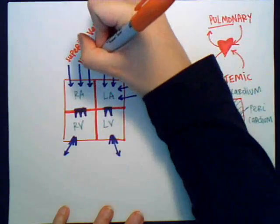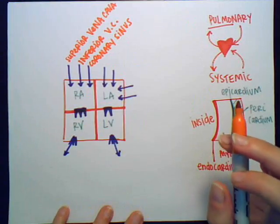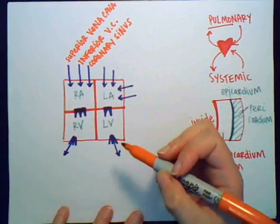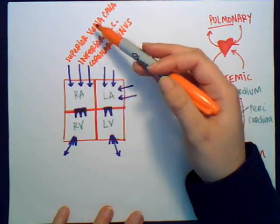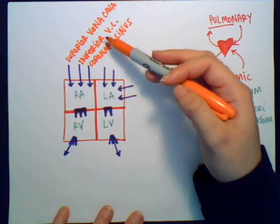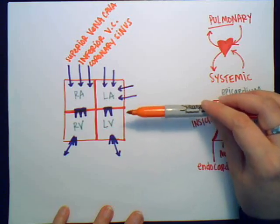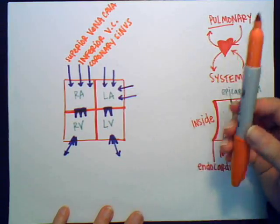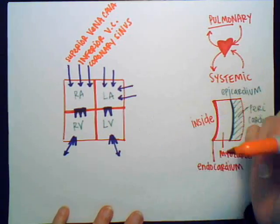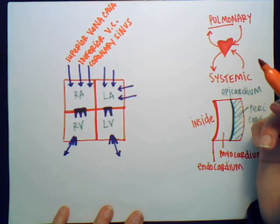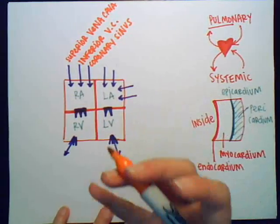The third vessel is the coronary sinus. Since we're coming to the right atrium and these are veins, they're bringing deoxygenated blood to the heart. The superior vena cava handles structures above the diaphragm, the inferior vena cava handles below the diaphragm — but the heart itself is also a muscle that needs oxygen and nutrients. The coronary sinus brings blood from the myocardium, the heart muscle itself.